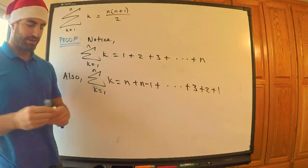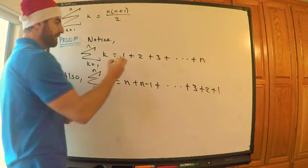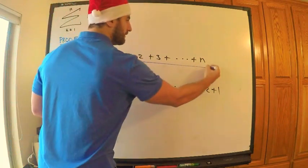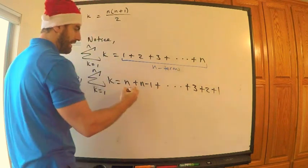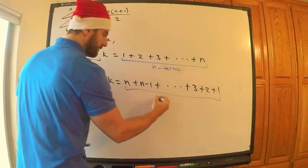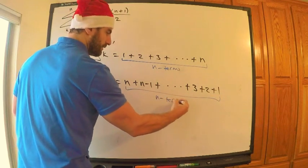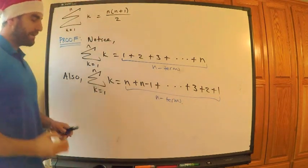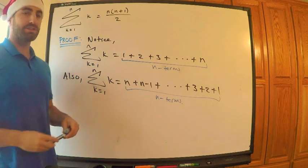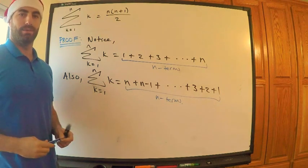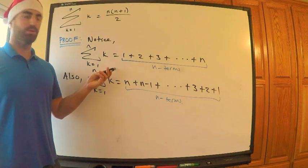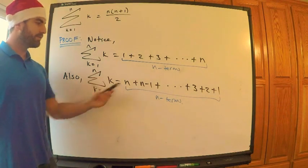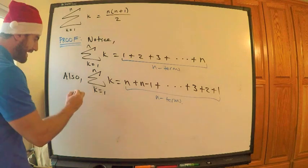So let's think about this for a second. How many terms are here? n terms and n terms. Now, at this stage, you want to ask yourself, what happens if I add them? I have essentially an equation here. The sum equals this, the sum equals this, let's add them up.